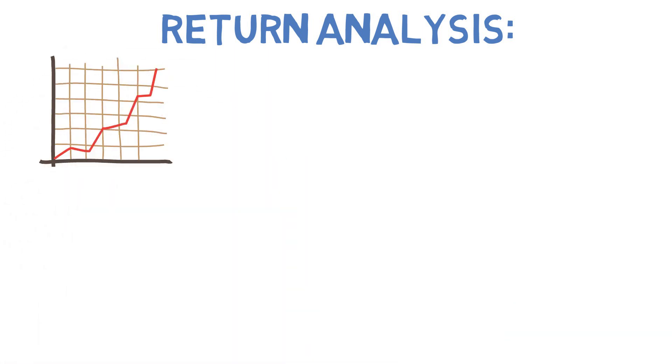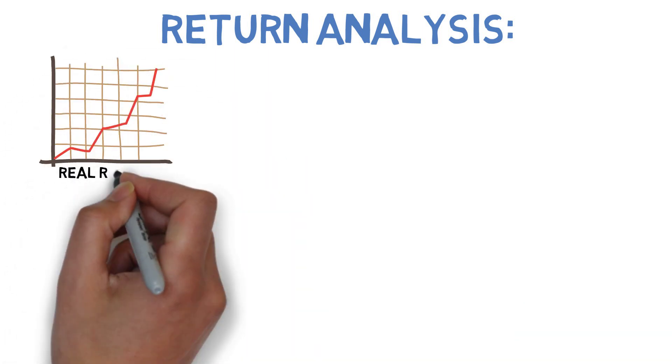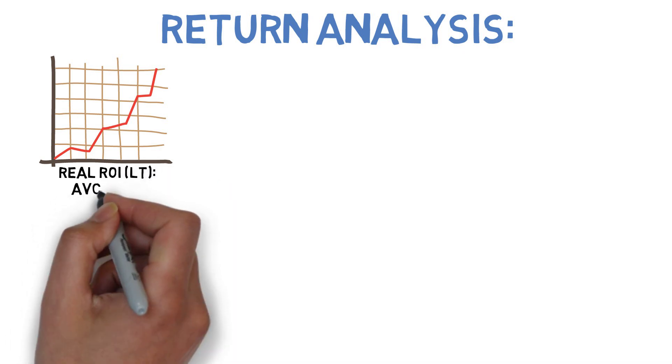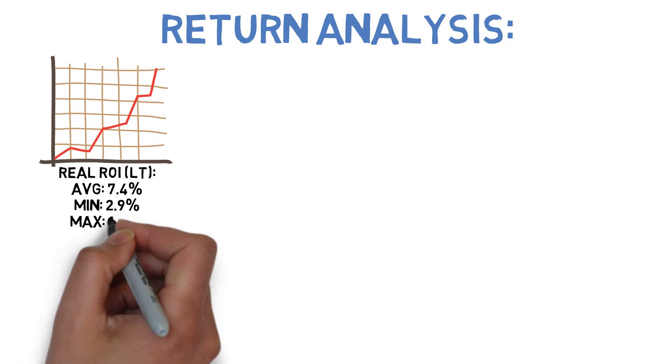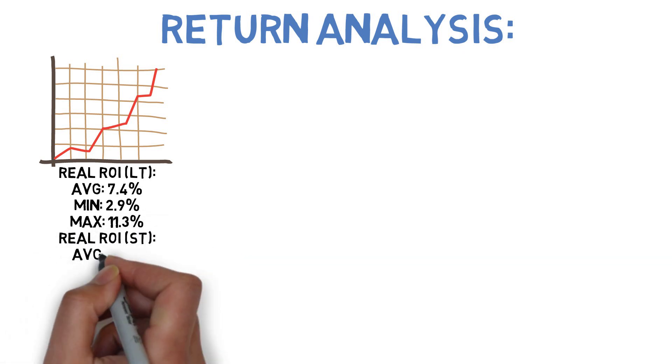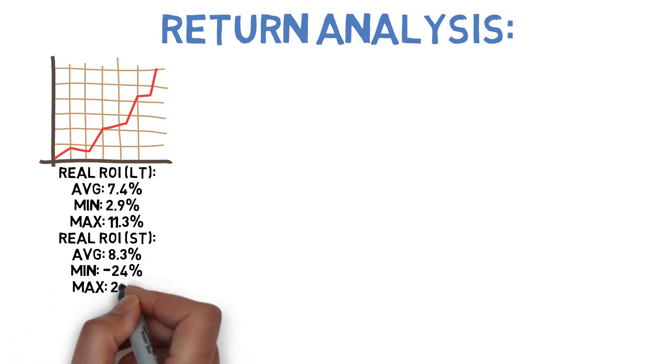So based on the data that I have since 1985, the average 10 year inflation adjusted return for the Swenson portfolio is about 7.4% per year. Its best and worst case return was around 11.3% and 2.9% per year respectively. That suggests that a $10,000 investment would grow to an inflation adjusted $20,300 over that time frame on average. At worst, you're looking at a stag of around $13,300 and at best $29,100.